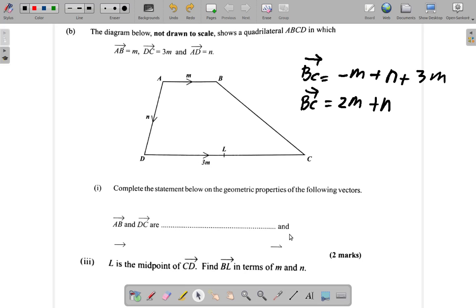Part B3 of the question. L is the midpoint of CD. Find BL in terms of M and N. That means we're going to find BL in terms of M and N.